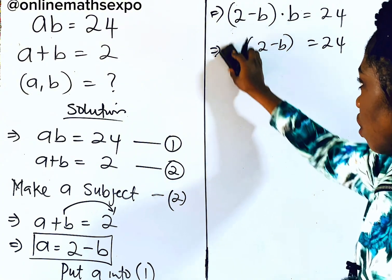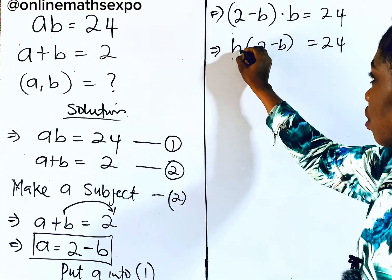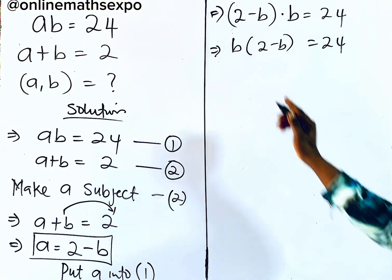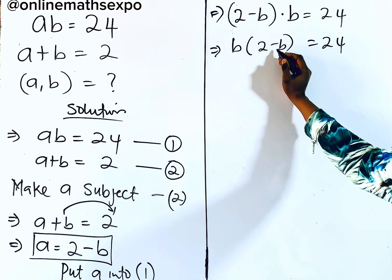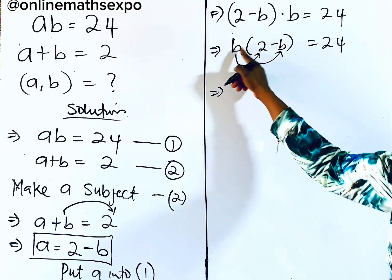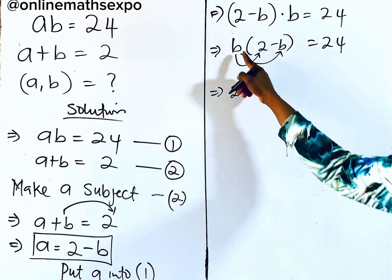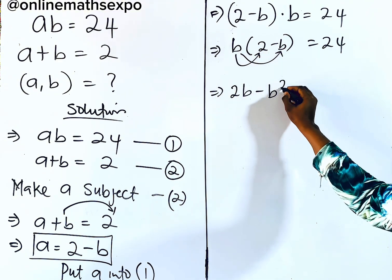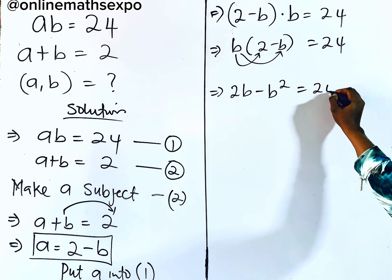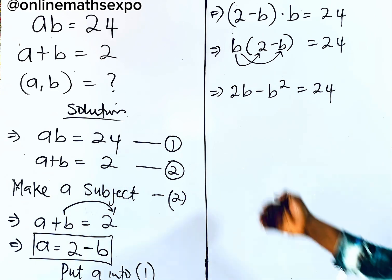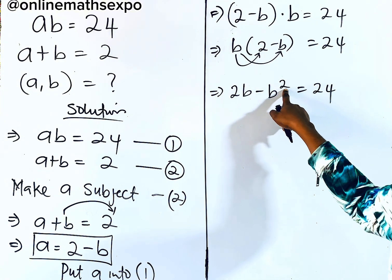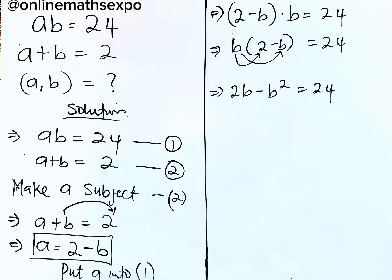Next, distribute b into the bracket. We have b × 2 = 2b, and b × (−b) = −b². So we get 2b − b² = 24. You can see this is leading to a quadratic equation because the highest power of b is 2.